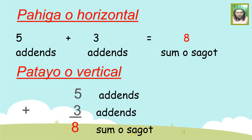Ang sagot naman sa adisyon ay tinatawag na sum. Paano ang paraan para makuha ang sagot dito? Maaari mong gawin or i-add ng pahiga or horizontal ang mga numero, or maaari rin patayo or vertical.